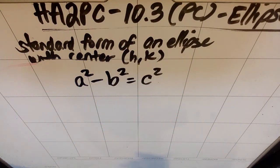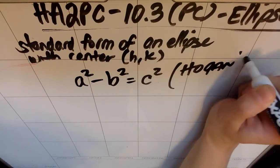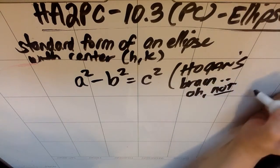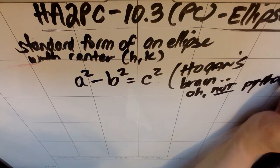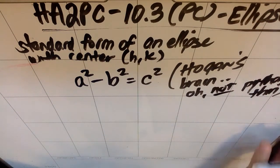So in my brain—Hogan's very sad damaged brain—Hogan's brain says oh it's not Pythagorean theorem, because Pythagorean theorem would be a squared plus b squared equals c squared.